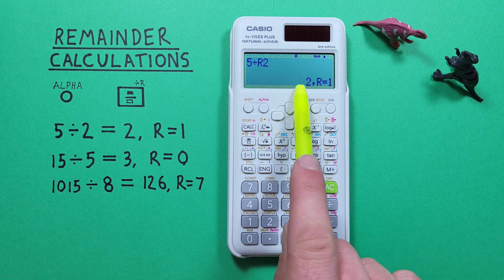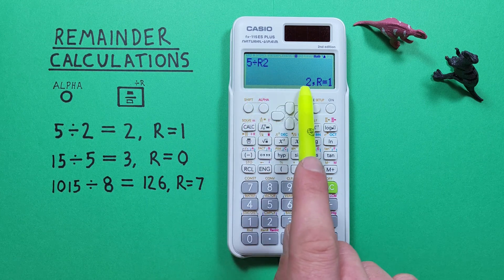We get 2, so we know that 2 goes into 5 twice with a remainder of 1.